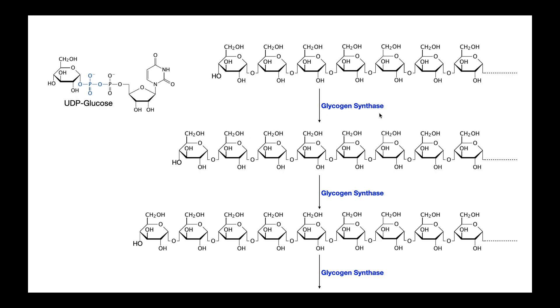It's just going to lengthen the chain of glucoses by one glucose unit every single catalytic cycle. Glycogen synthase acts here, we get chain lengthening by one glucose. It acts again, chain lengthening by another glucose, and so on and so forth.